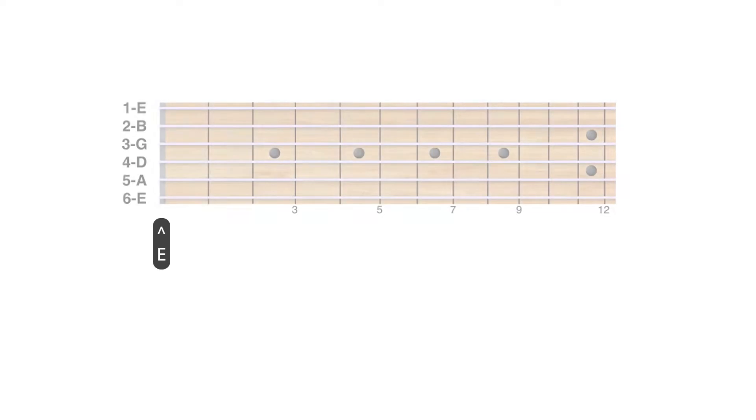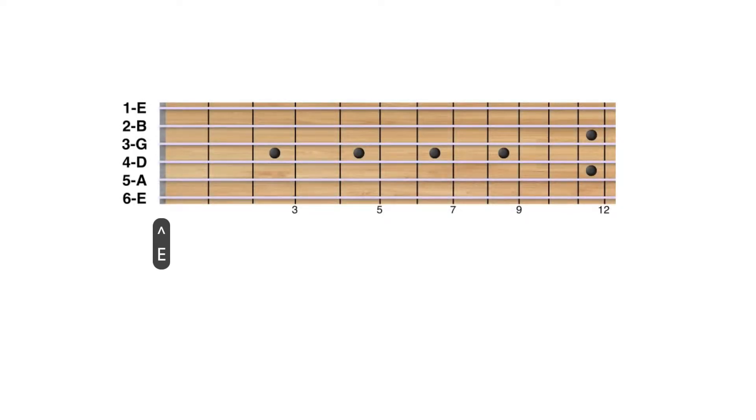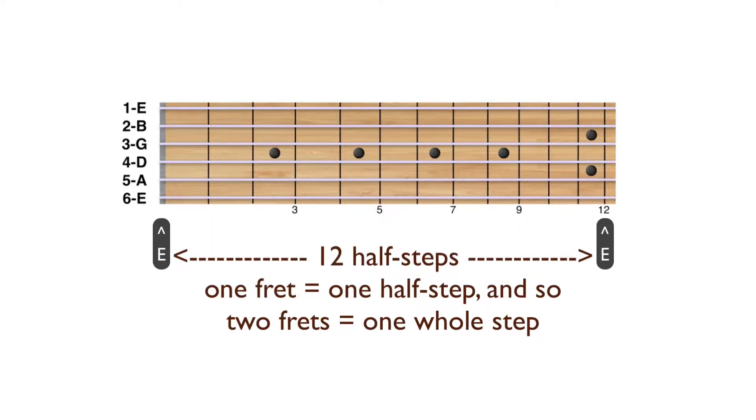We can start on any note we want, then ascend in pitch from that note through every other available note on our instrument until we come again to the note of the same name one octave higher, and we will have gone through twelve notes in half-step increments, each equal in frequency difference from its neighbor.